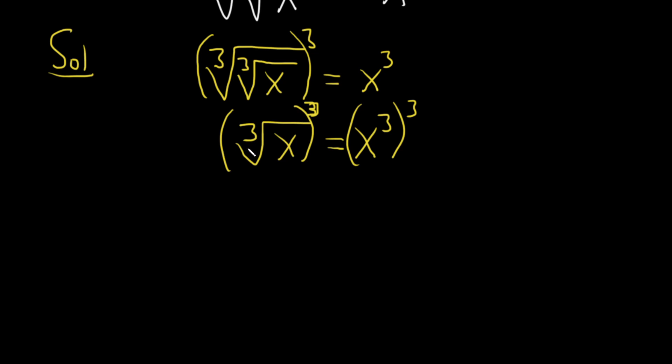When you cube the cube root of x you just get x. And then here properties of exponents tell us that we multiply. So three times three is nine. So this is equal to x to the ninth.